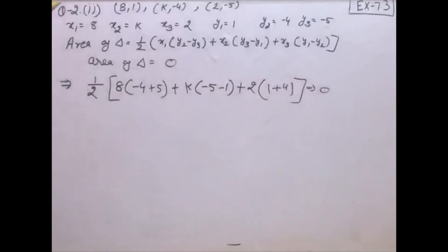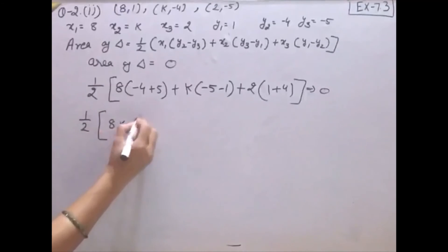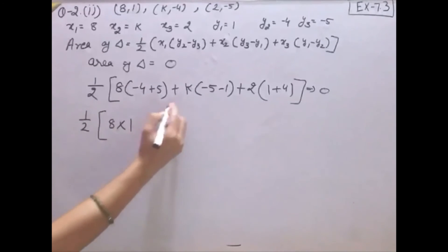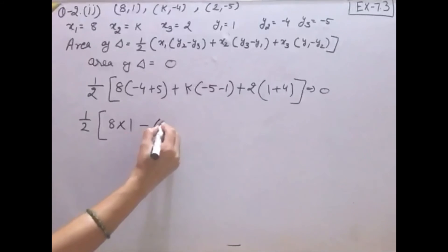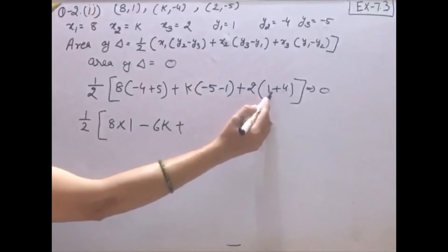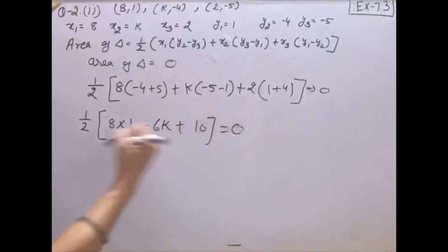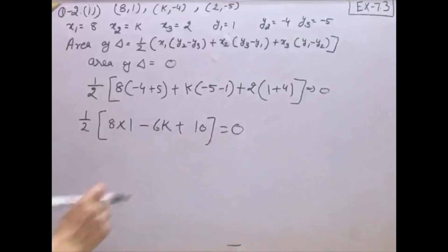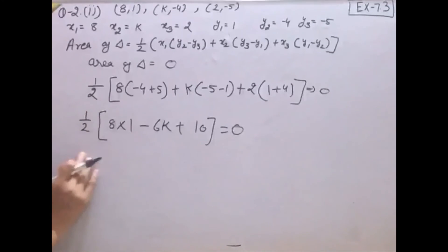Area equal to 0 put करेंगे, तो one upon two cancel हो जाएगा। Eight × (−4 − (−5)) = eight × 1 = 8। k × (−5 − 1) = −6k। Two × (1 − (−4)) = 2 × 5 = 10। तो यहाँ से आएगा: eight − 6k + 10 = 0।